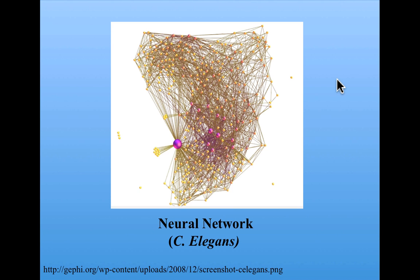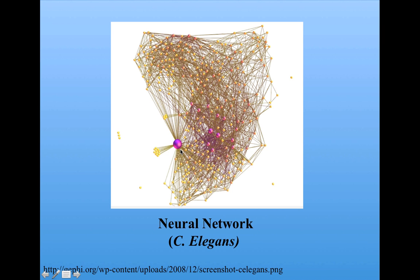You can see something in this picture that's typical of many networks: the distribution of links is not uniform. That means that there are some nodes that have many, many more links coming into them or out of them than other nodes. Nodes like this one, that link to many, many other nodes, are often called hubs.